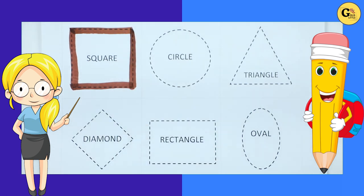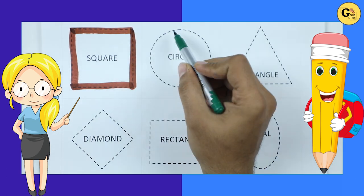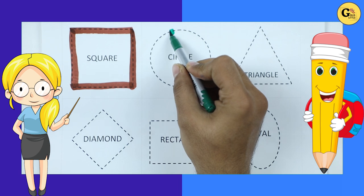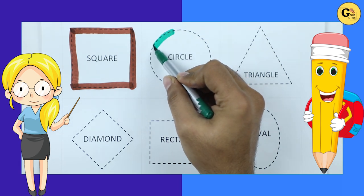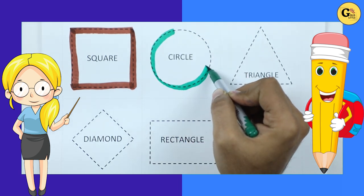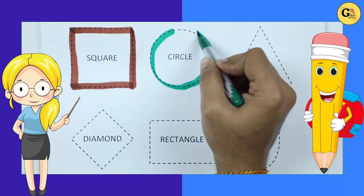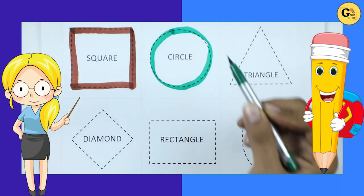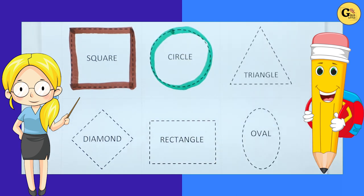It's circle. Circle with green color. Round. Circle.